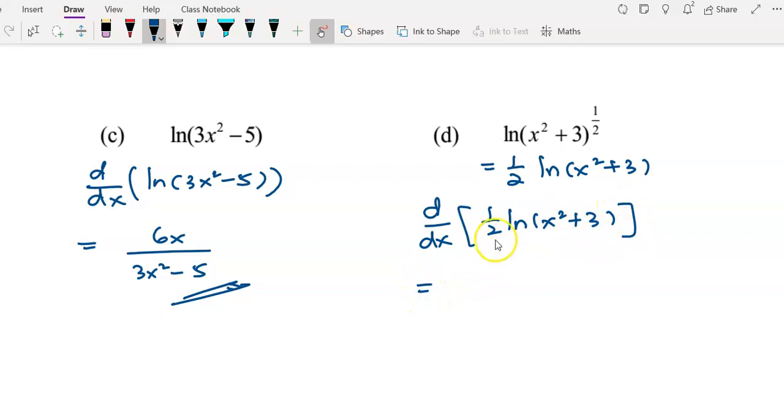Now differentiate - this is the coefficient of the function. To differentiate ln(x²+3), you need to differentiate x²+3 first to get 2x over (x²+3). After that, cancel the 2 with the 1/2 coefficient to get x/(x²+3). Thank you for watching.